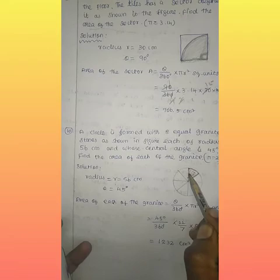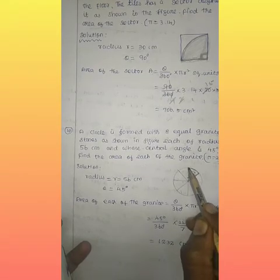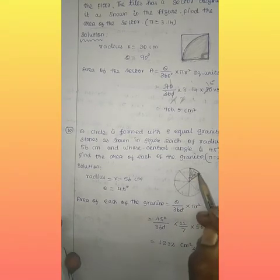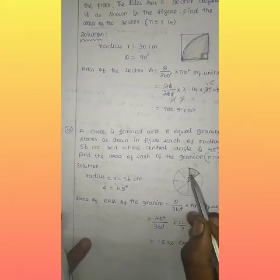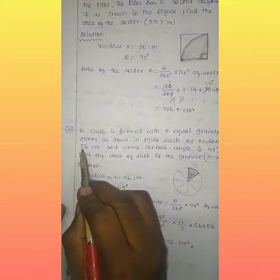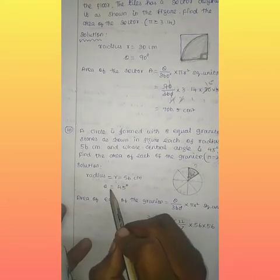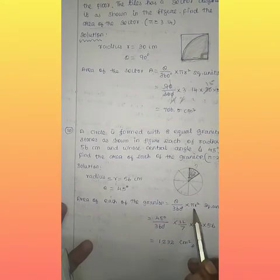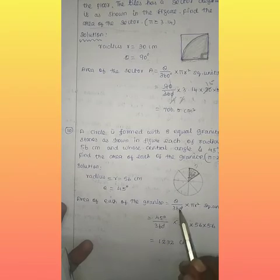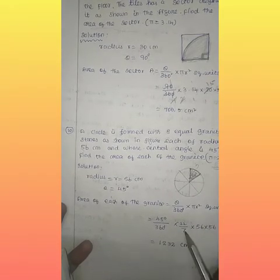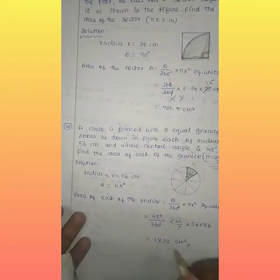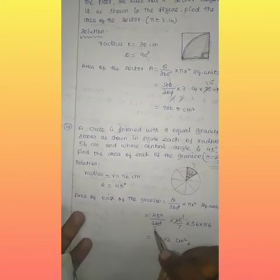The radius is 55cm. The area formula is applied: (Theta / 360) × π × r². With theta = 45 and r = 56, we use π = 22/7. We cancel where possible to find the area of each granite stone.